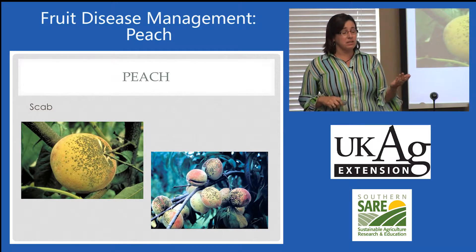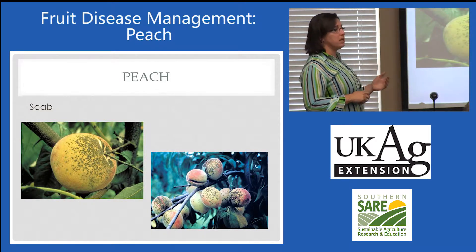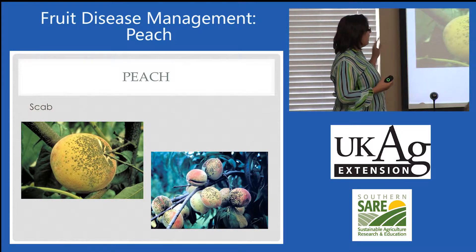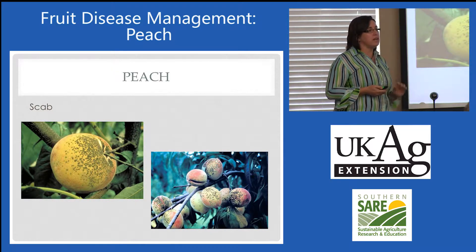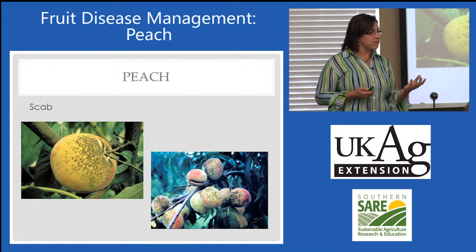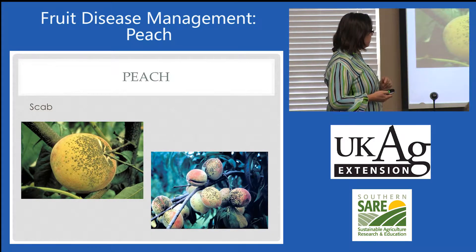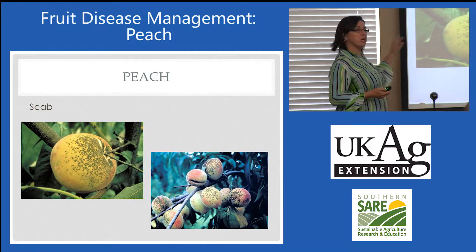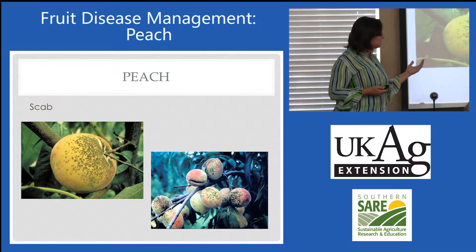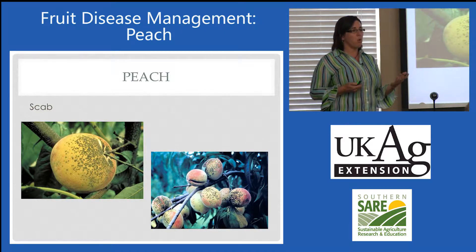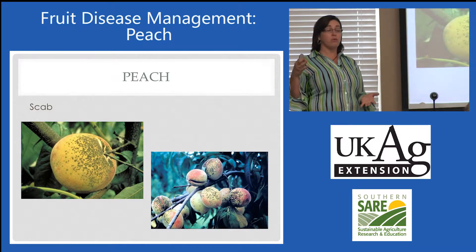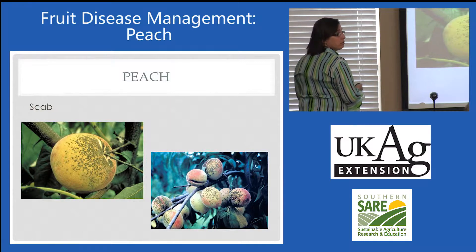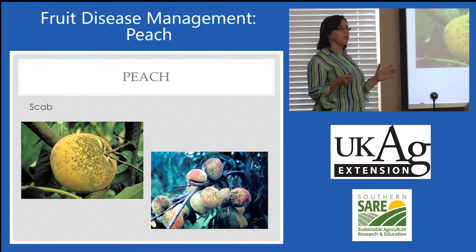Scab is very common. Peach scab is going to overwinter in twigs and in rough bark. It's going to infect right at shuck split, which is essentially petal fall. At that point, it's going to infect for about two to four weeks after that, and then that susceptibility is over. So it's the very young fruit that are infected — that is the critical period.